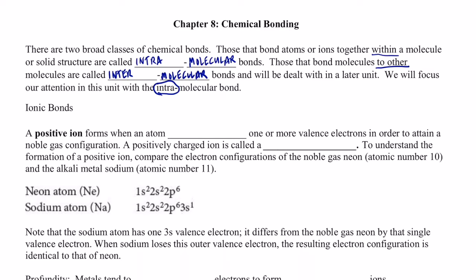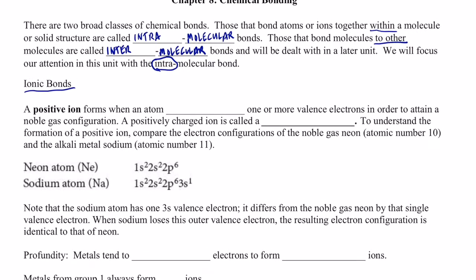The first one I want to talk about with you folks is ionic bonds. Now in the last unit we talked about what a positive ion was. We're going to review that right now. A positive ion forms when an atom loses one or more valence electrons in order to attain a configuration of a noble gas. Now, like we said in our earlier video, the term loses is not completely accurate. Those electrons do go somewhere. But in this context, for this portion of our notes, I think it's appropriate to say that positive ions formed when neutral atoms lose one or more valence electrons.